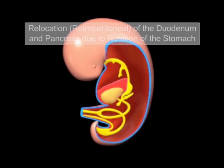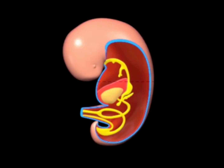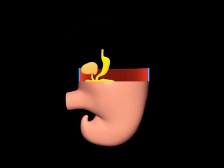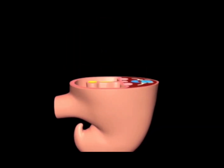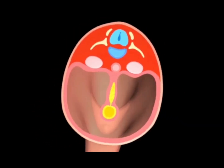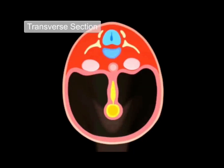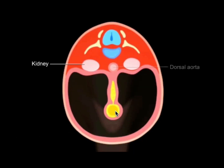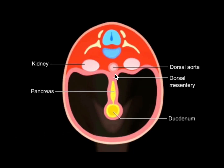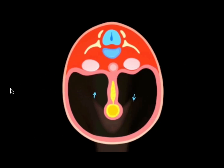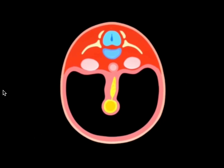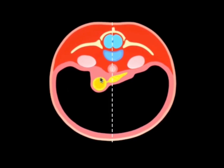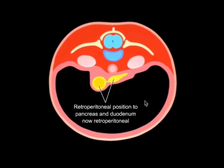To end this chapter on the foregut: after the stomach and duodenum rotate, most of the pancreas and the duodenum get pinned to the posterior body wall. Since they're now pinned to the posterior body wall, they are considered secondarily retroperitoneal organs.